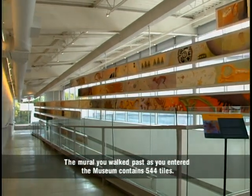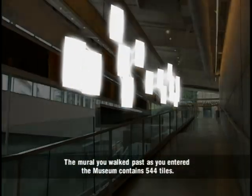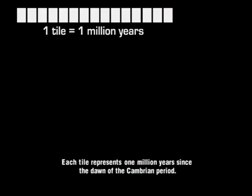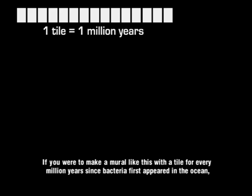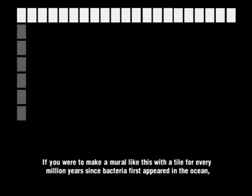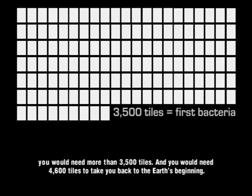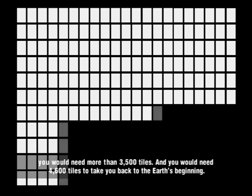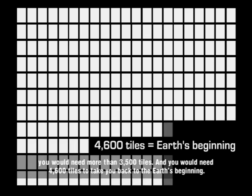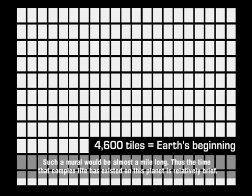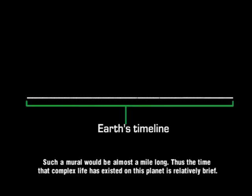The mural you walked past as you entered the museum contains 544 tiles; each tile represents 1 million years since the dawn of the Cambrian period. If you were to make a mural with a tile for every million years since bacteria first appeared in the ocean, you would need more than 3,500 tiles — and 4,600 tiles to take you back to the Earth's beginning. Such a mural would be almost a mile long. Thus the time that complex life has existed on this planet is relatively brief.